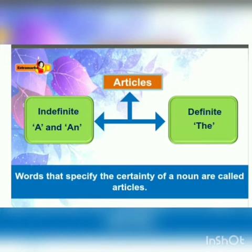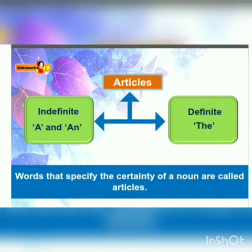A and an are indefinite articles, and the is the definite article. So articles are divided into two parts: indefinite and definite.